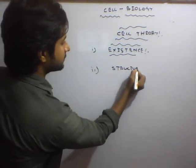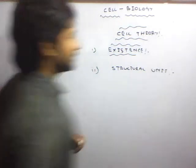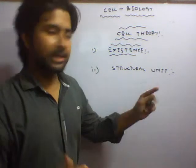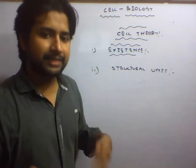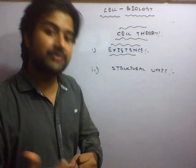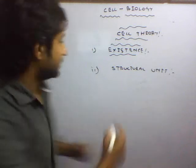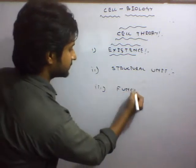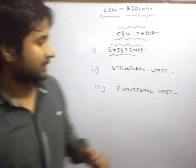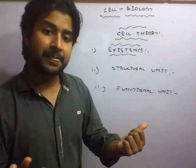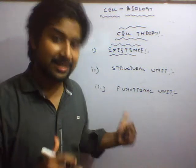The second point is that the cell is a structural unit — the organization of the human body and all living creatures is made up of cells and substances derived from cells. The third point is that the cell is a functional unit — all vital activities of an organism occur because of the activity of the cell.